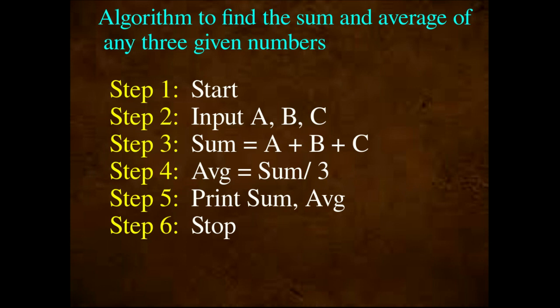We have to write an algorithm to find the sum and average of any three given numbers. The algorithm procedure uses steps: Step 1, Step 2, etc. Always Step 1 is Start. What is the problem? You have to find the sum and average of any three given numbers. We will do this step by step. The first step is Start — Step 1: Start.